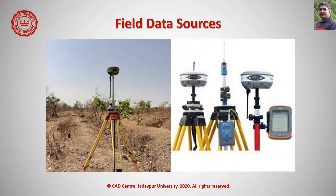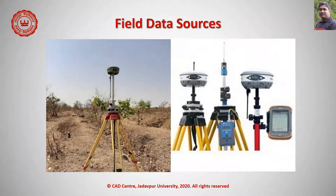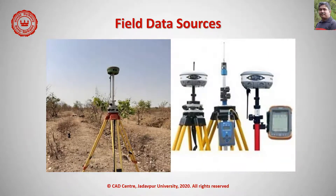Apart from this, Global Navigation Satellite Systems (GNSS) are also used for field data collection. GNSS involves satellites, ground stations, and user equipment to determine positions around the world. Various types of attribute data are also surveyed from the field and fed into the GIS.